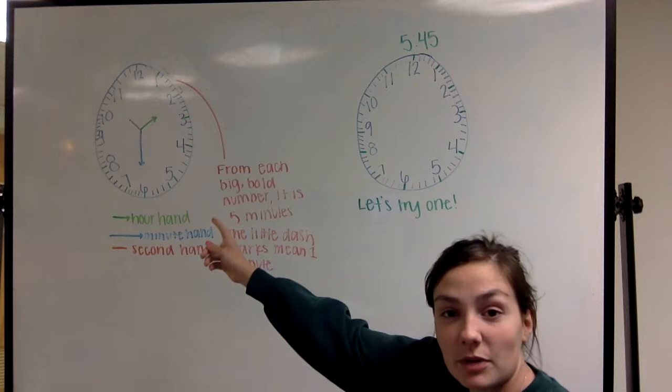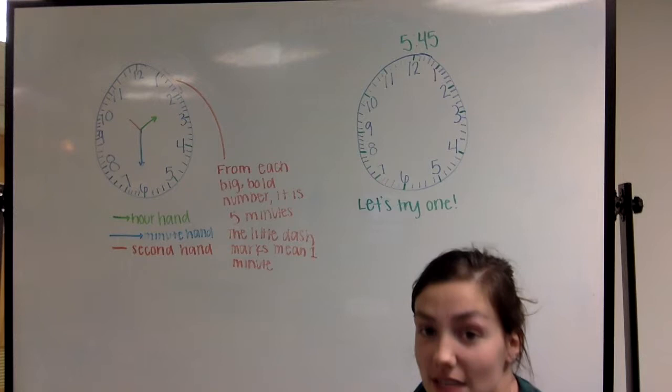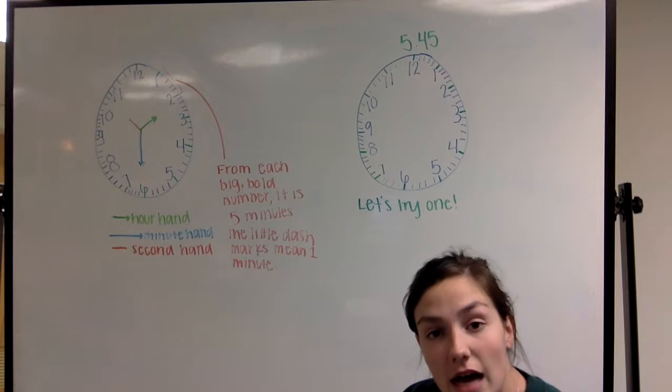As you can see, I have an example right up here on the board. Lime green shorthand is the hour hand. So that tells you what the hour is. So when you read a clock, you would say, oh, it's three o'clock. So the hour hand would be the three. It would point to the three.